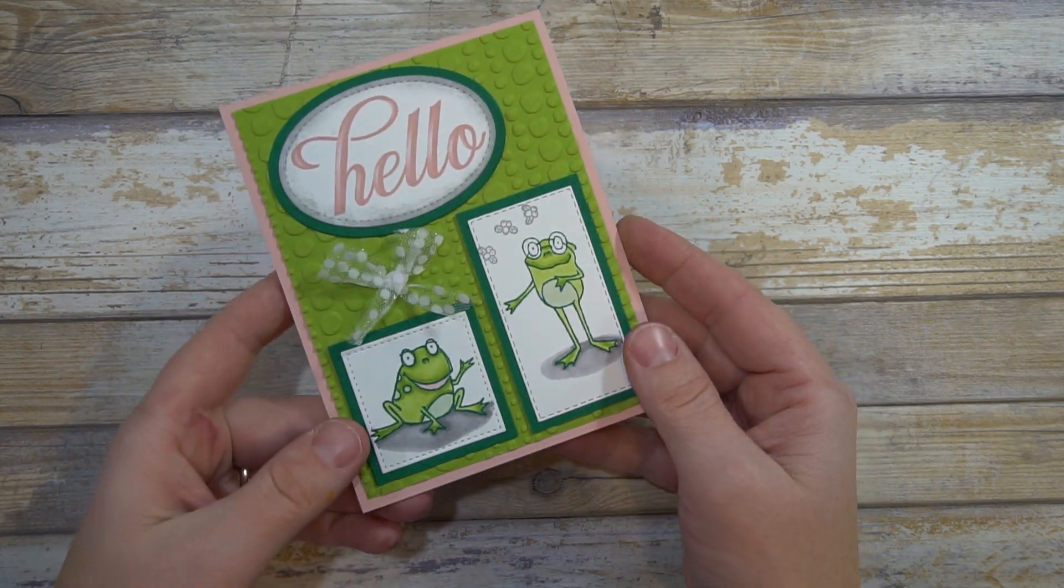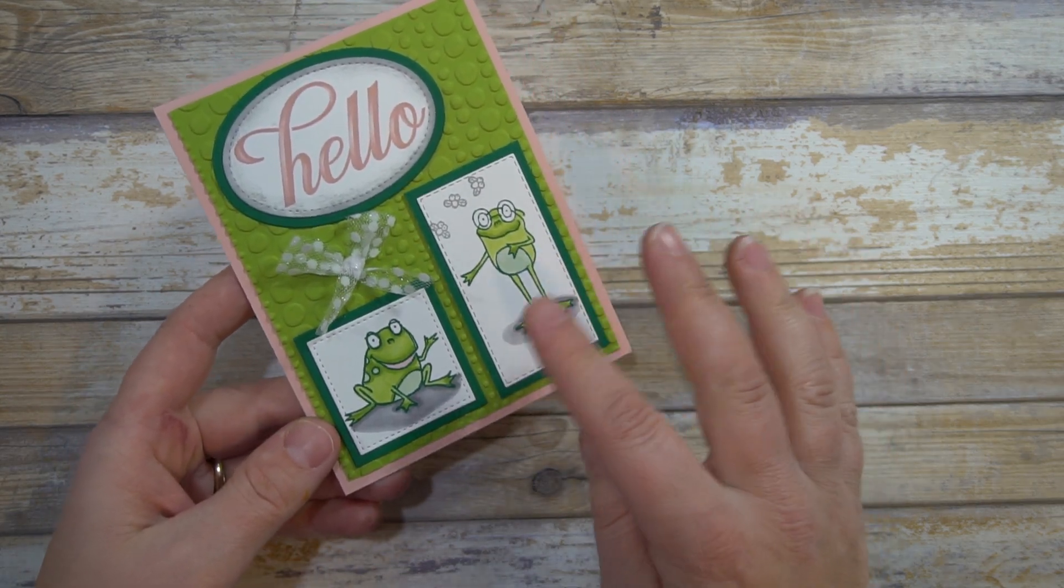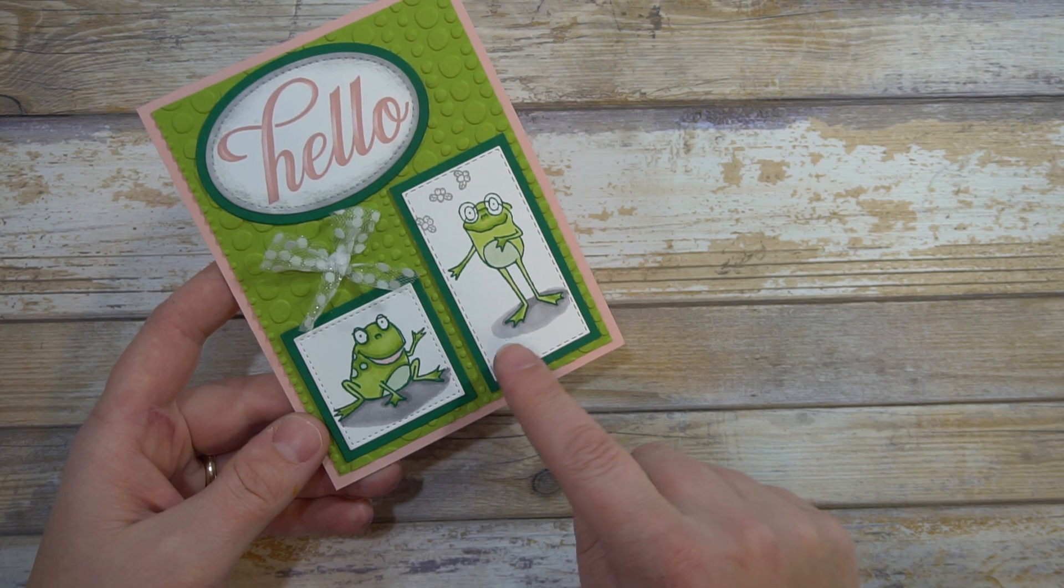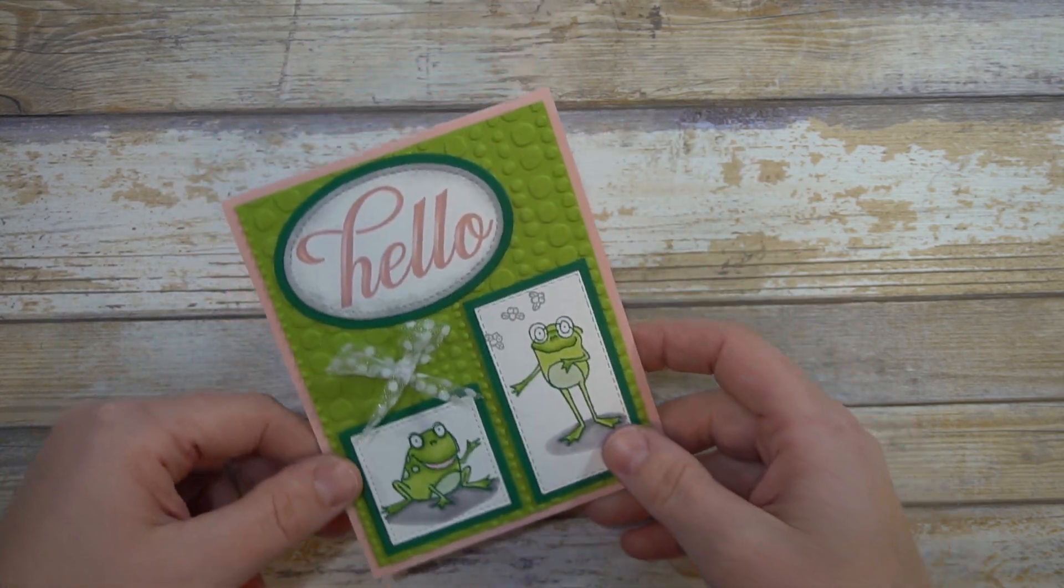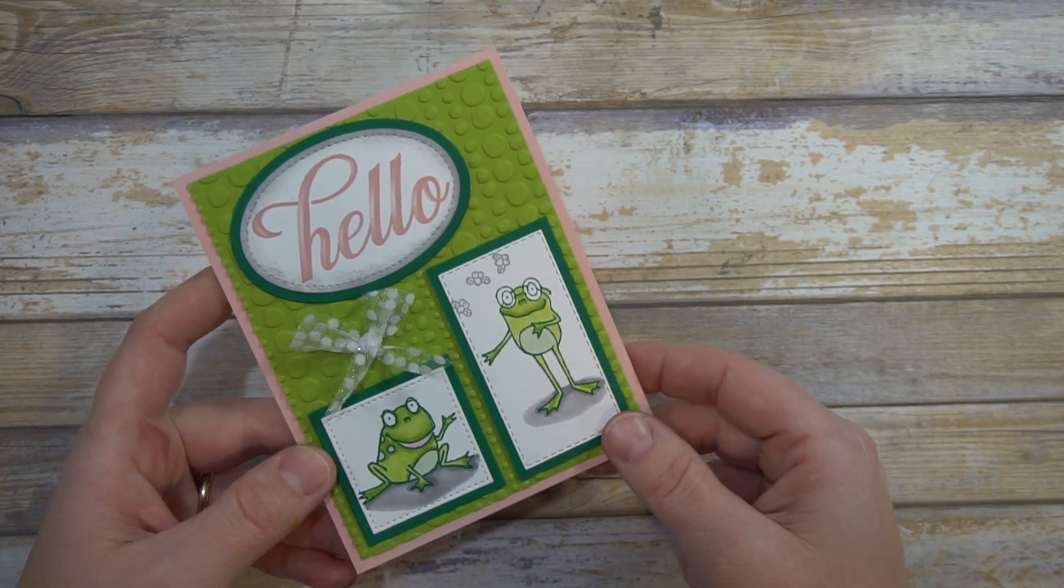I won't be showing any of the Big Shot work, so I already have all the pieces cut out and the embossing done. I will start off by showing you the stamping for the frogs.